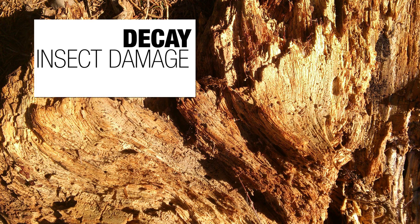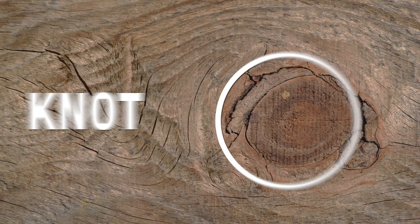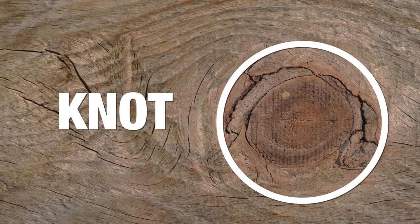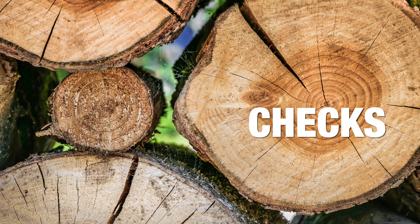There are other ways lumber can have defects. We can have decay or insect damage — this particular decay is from a fungus. A wane refers to irregular edges that come from sawing too close to the perimeter of the log, leaving unclean edges. A knot is where a branch was once connected to the tree; if the knot rots and falls out, we have a knothole. Checks are the cracks at the perimeter of a log from differential shrinkage, because so much more shrinking occurs around the perimeter than at the core.